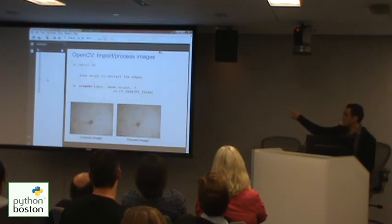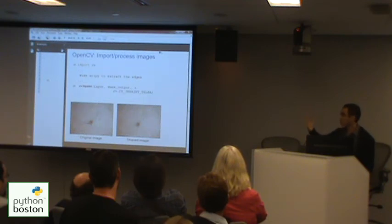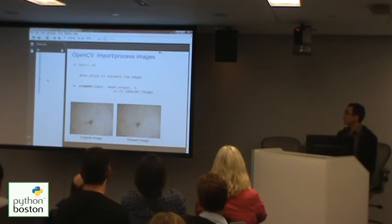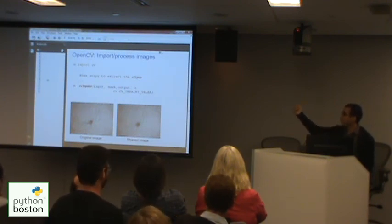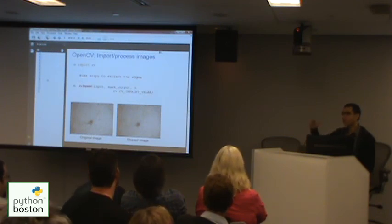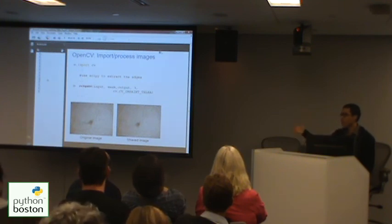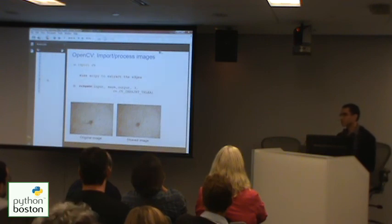First, I used edge detection to detect the hair, because the skin is homogeneous and the hair creates transitions between colors. If you use edge detection you can detect the hair. And once you detect the hair, you need to replace it. For that you use OpenCV, which offers the inpainting function. Basically, you interpolate the removed hair pixels with the neighboring pixels using inpainting. And it's done for the whole 500x500 image in less than 10 seconds, depending on the system. It's quite a fast and accurate algorithm.